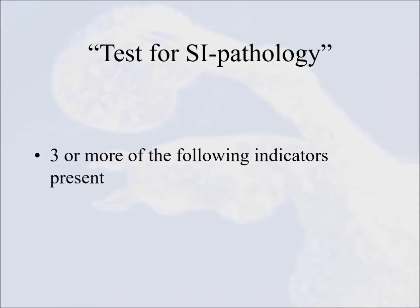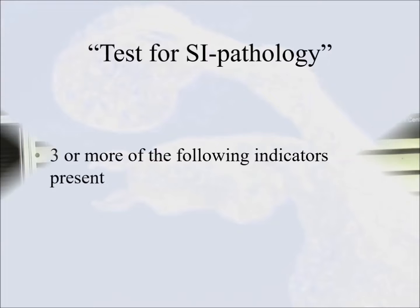We have designed the test for sacroiliac pathology. When three or more of the following indicators are present, it's very likely — above 90% certainty — that your horse has iliosacral problems. When your horse doesn't have three or more of those, it's very likely your horse doesn't have iliosacral problems.